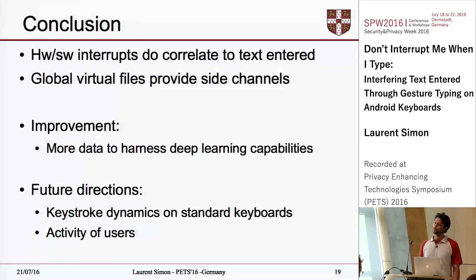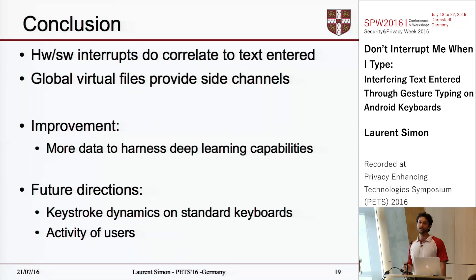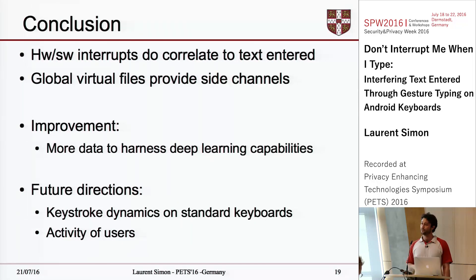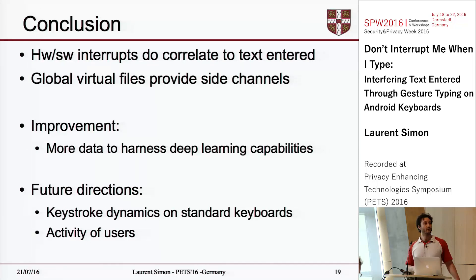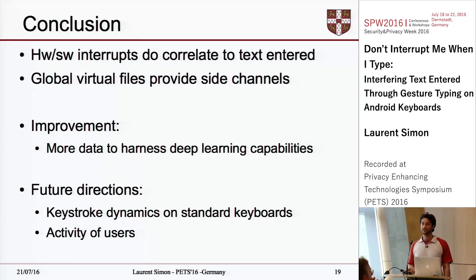To wrap up, we showed that hardware and software interrupts do correlate to what users type on the device, and more importantly, that global virtual files do enable new side channels. We believe results could improve with more training data for the RNN. For future directions, it may be possible to reuse this hardware/software side channel to attack more traditional keyboards, and more generally to infer what people do on their phones using this new side channel.